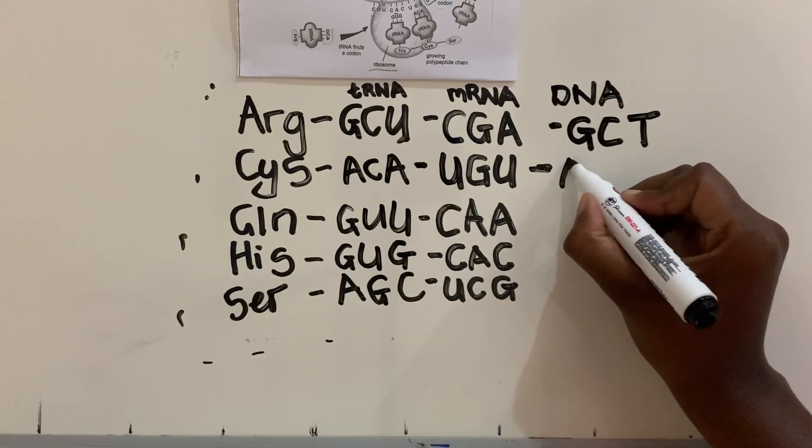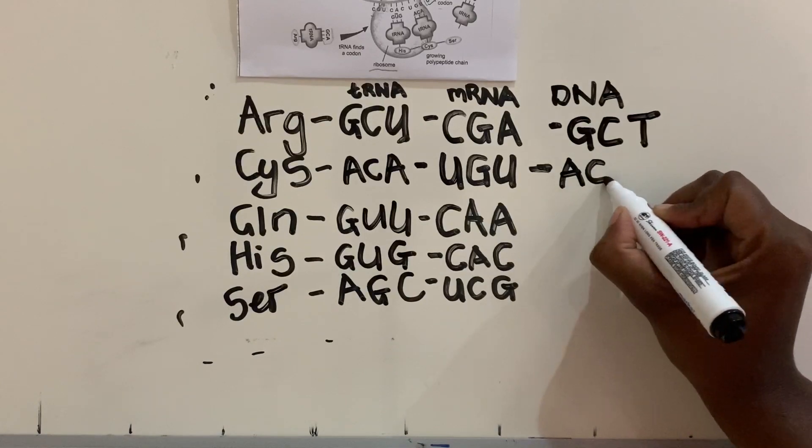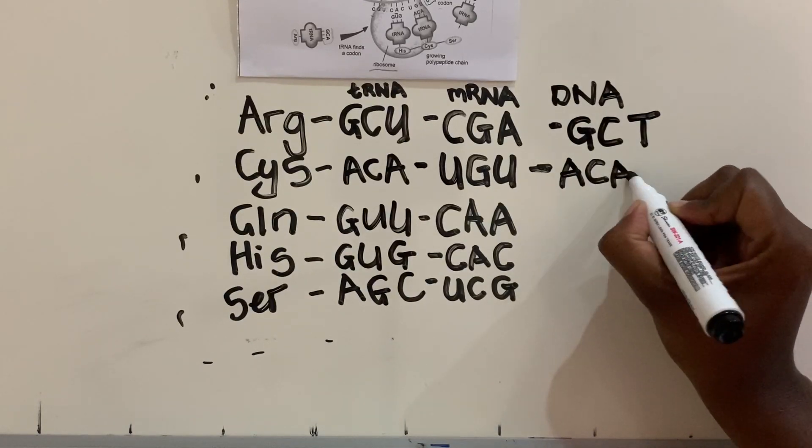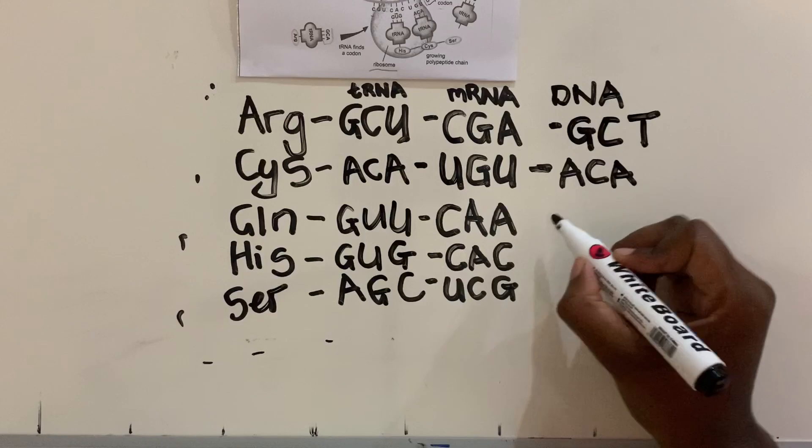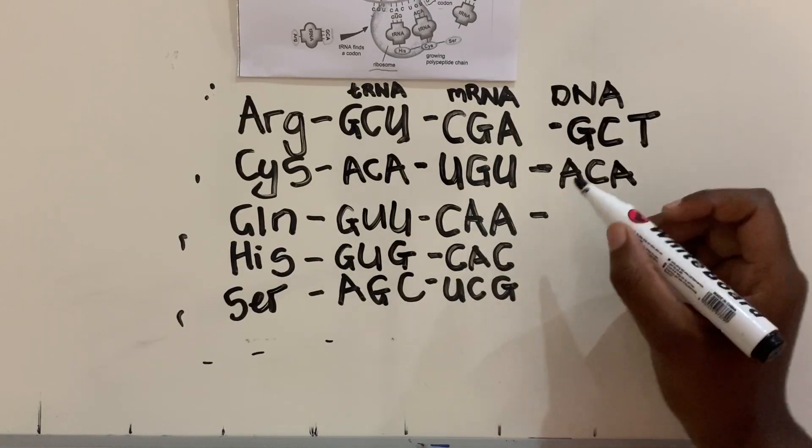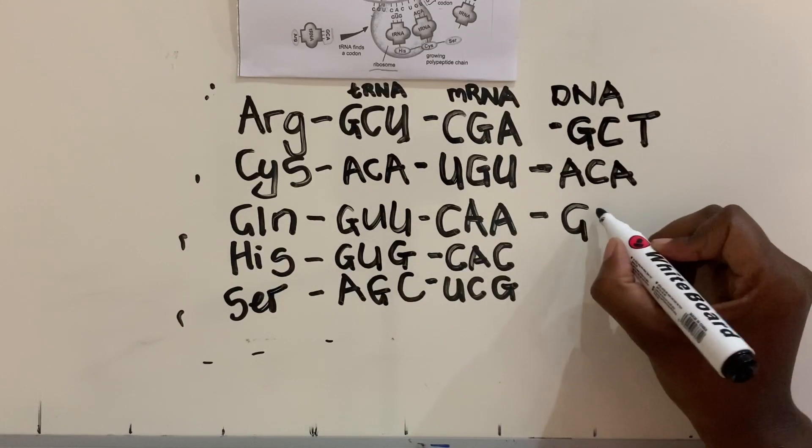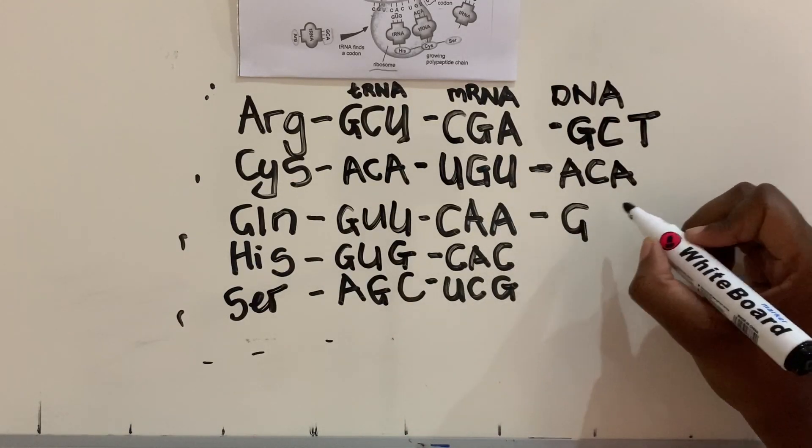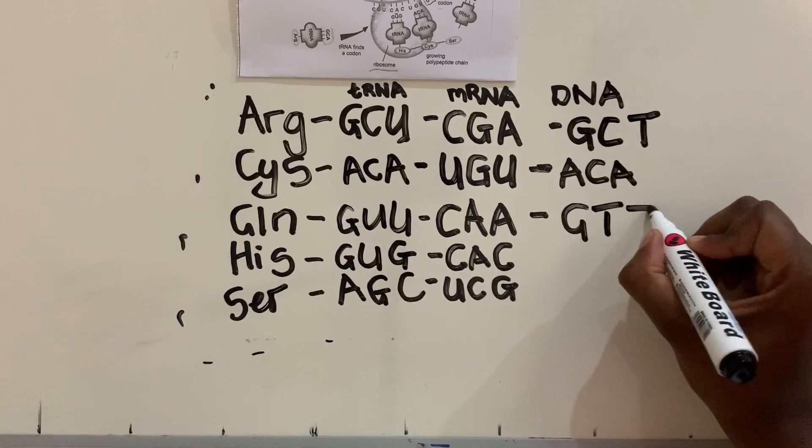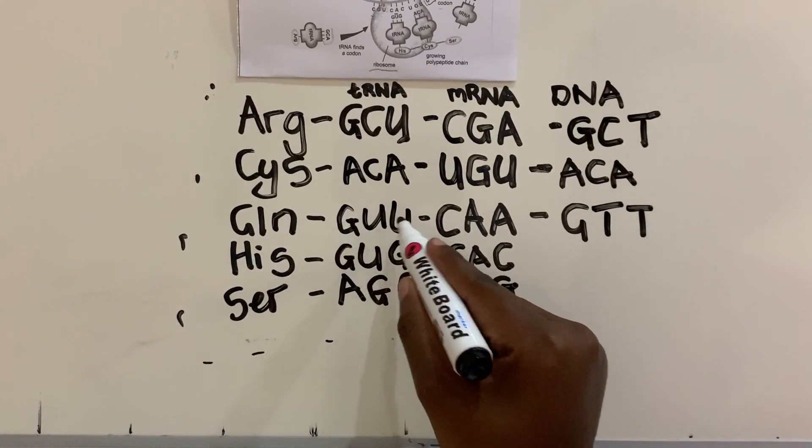And then we move on. Same thing: we go from UGU, and that is ACA. That's just how you do it. And then CAG. Remember, in DNA, G bonds with C, so it's going to be GTT instead of GUU.